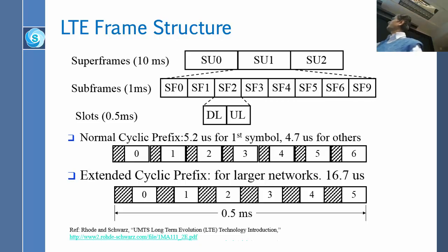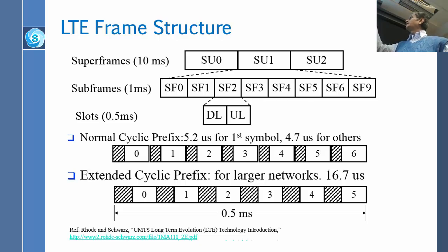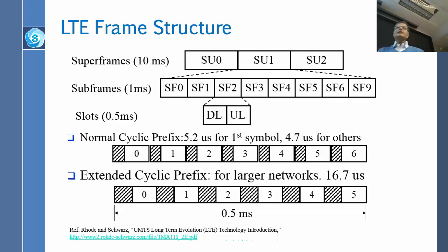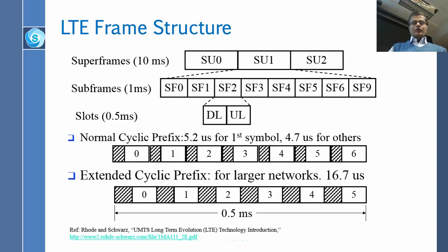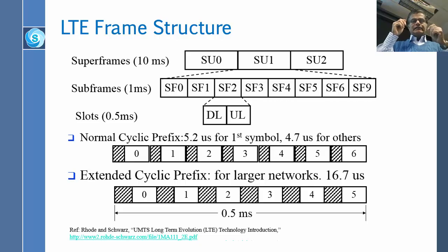The difference between the first prefix of 5.2 microseconds and the rest at 4.7 is because if you use 4.7 for all of them, you are still left with a remainder at the beginning, so the first one is made slightly larger. The important thing to notice is that the downlink is 0.5 milliseconds and the uplink is 0.5 milliseconds.